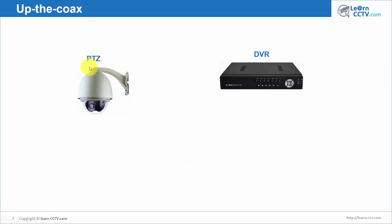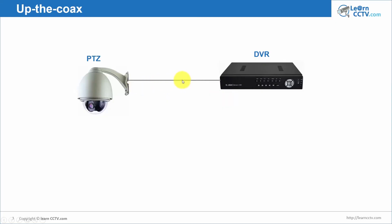Here I have the PTZ camera so I can control the movement. And here I have my DVR. I can also have a joystick — I can connect a cable from the DVR to the camera, or I can use a cable to connect a joystick to the camera. It's a regular coaxial cable, but I have to use a protocol to send commands through it.